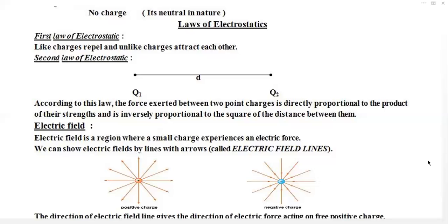The second law of electrostatics consists of two points: first, the force of attraction or repulsion is directly proportional to the product of their charges; second, this force is inversely proportional to the square of the distance between them.